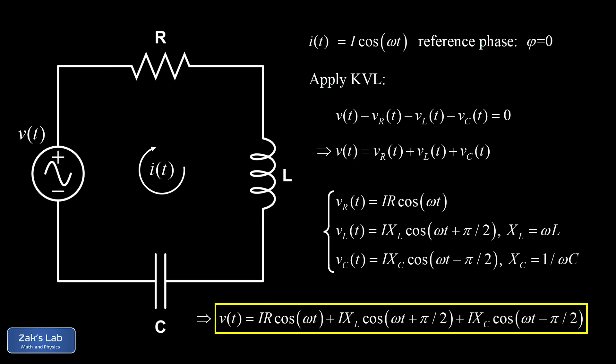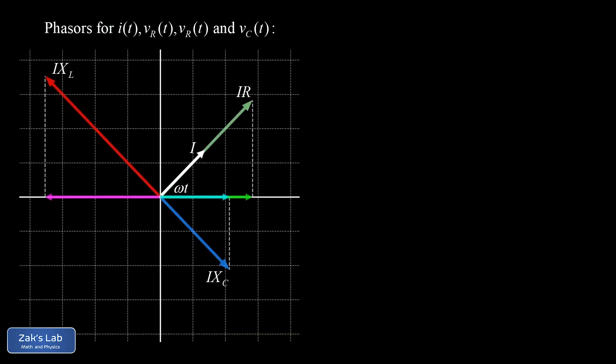The phasor representation of sinusoidal functions simplifies the algebra and gives deeper geometric insight. The idea is to represent a sinusoidal function with angular frequency ω as a vector rotating with angular frequency ω. At an arbitrary moment t, the current phasor is tilted at angle ωt with phase zero by convention. The resistor voltage phasor is in phase with magnitude IR, the inductor phasor leads by π/2 with magnitude IX_L, and the capacitor phasor lags by 90° with magnitude IX_C.